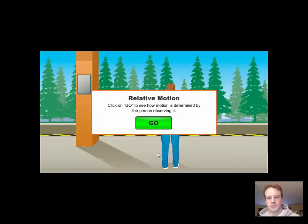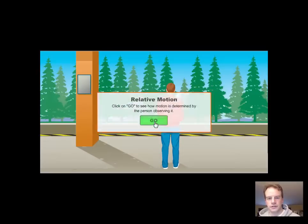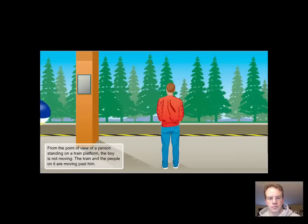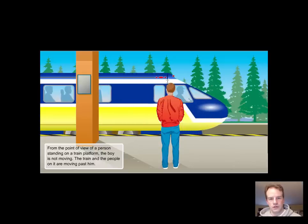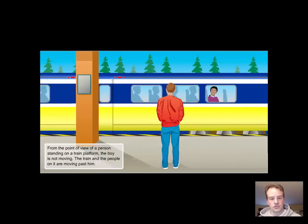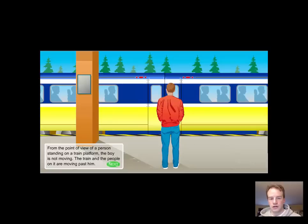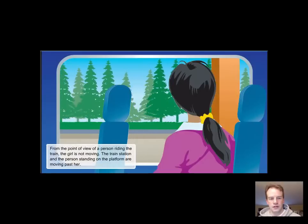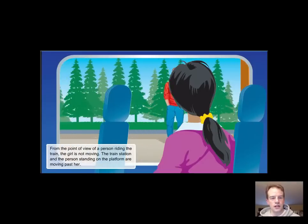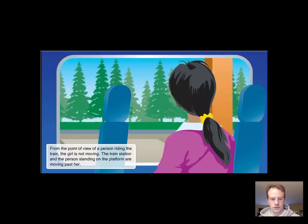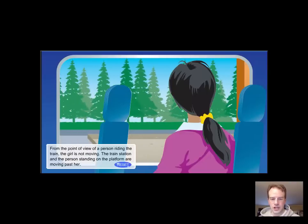Let's look at a classic example of relative motion. From the point of view of a person standing on a train platform, the boy is not moving. The train and the people on it are moving past it. However, from the point of view of a person riding the train, the girl is not moving. The train station and the person standing on the platform are moving past her.